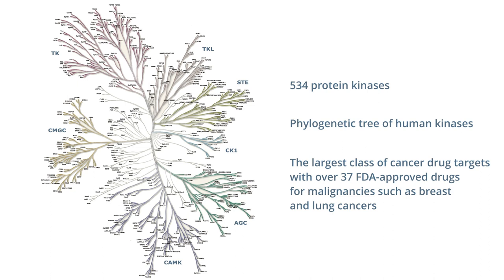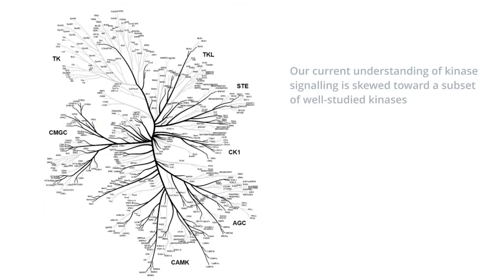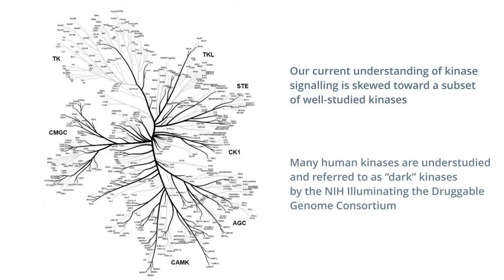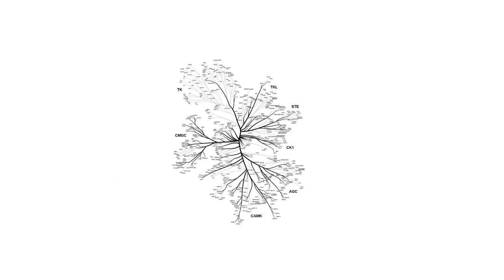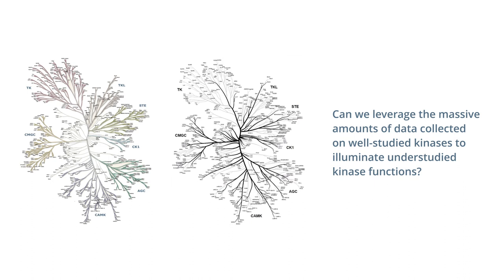Although we've made great progress in targeting several of these kinases and eliminating their functions, there are still several of them that are really understudied. In other words, we know very little about what these kinases do. So in this paper, we sought out to really answer an important question: can we elucidate these understudied kinases by leveraging the massive amounts of data that we already have on some of the well-studied ones?